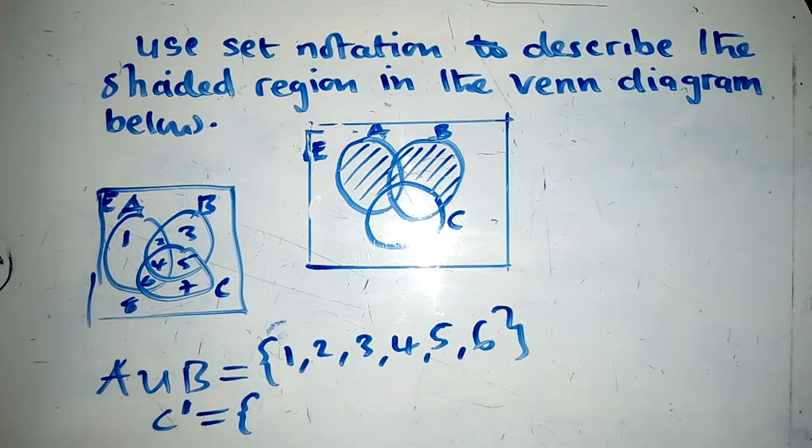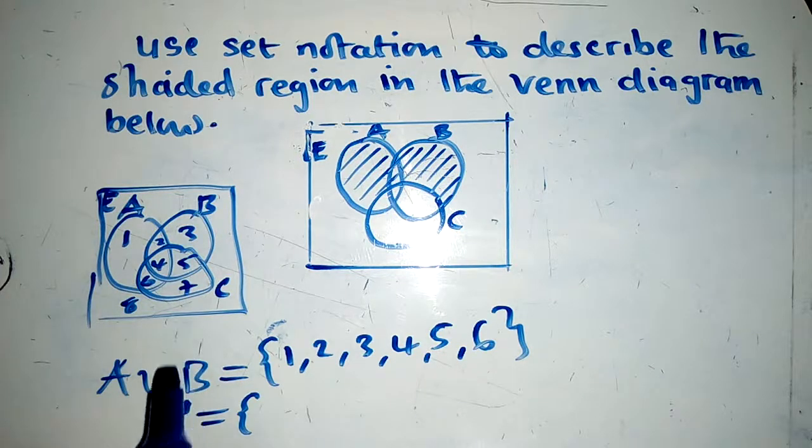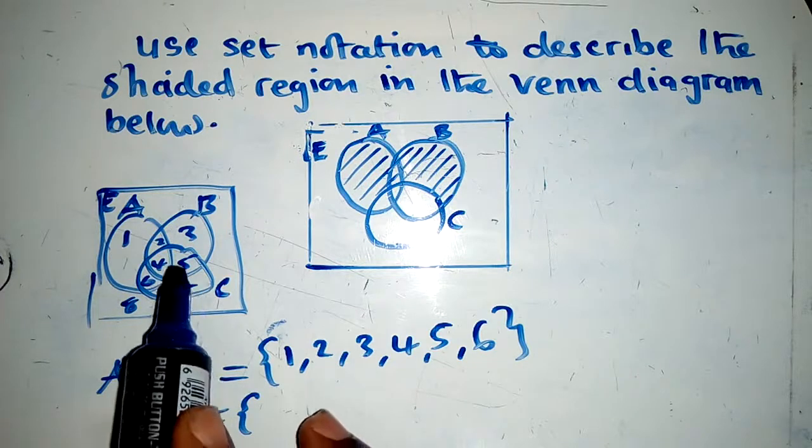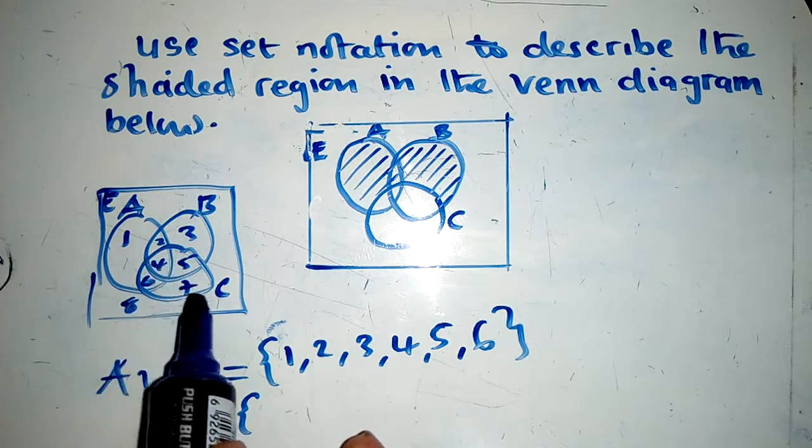a complement means don't get what is in the set that has been complemented. So for example, here set C has been complemented. So we don't need to get any element from set C.